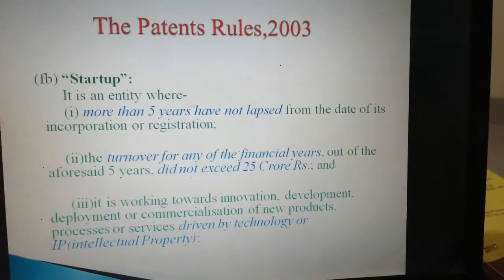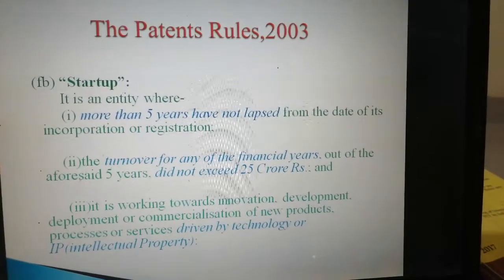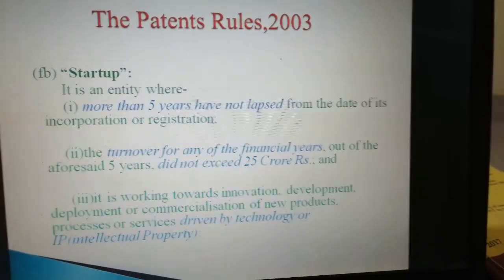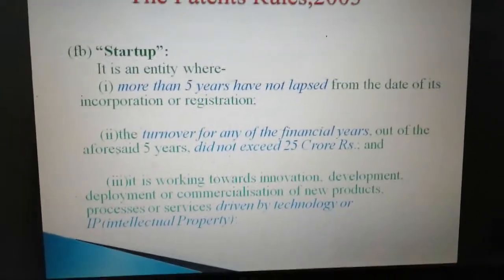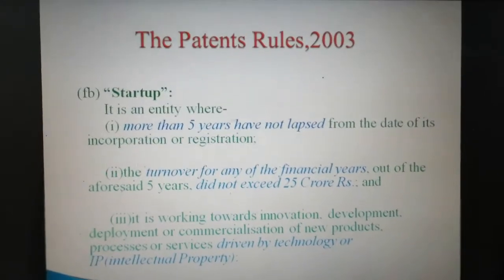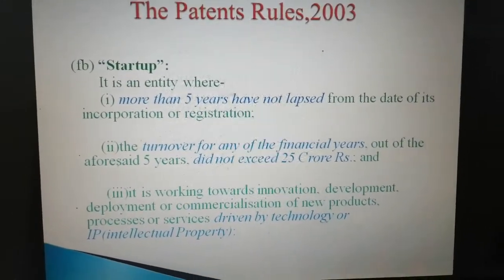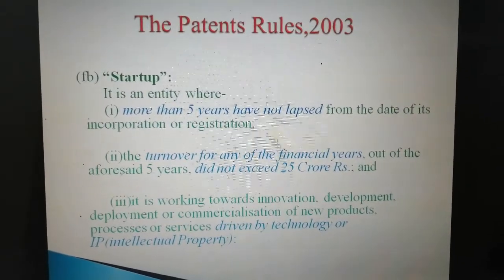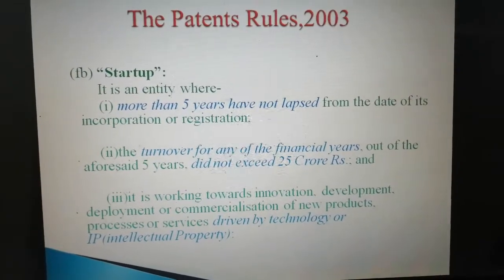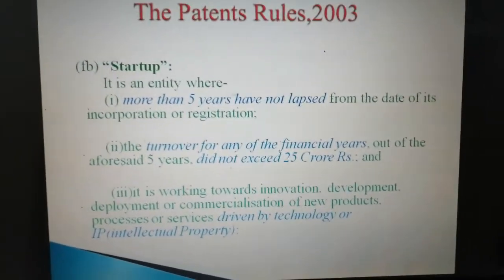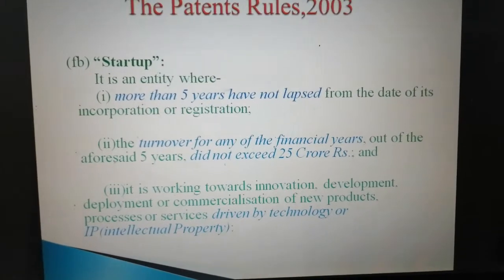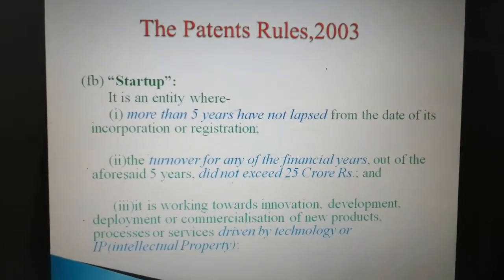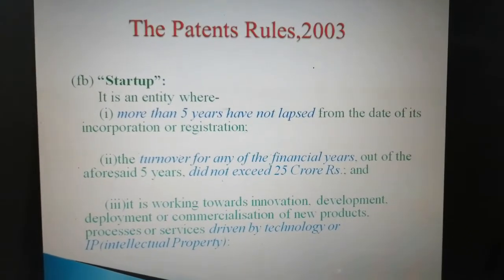Clause FB defines what is a 'Startup'. It is an entity where: Sub-clause 1 says more than 5 years have not lapsed from the date of its incorporation or registration; Sub-clause 2 says the turnover for any of the financial years out of the aforesaid 5 years did not exceed 25 crore rupees; and Sub-clause 3 says it is working towards innovation, development, deployment, or commercialization of new products, processes, or services driven by technology or IP — IP is intellectual property.